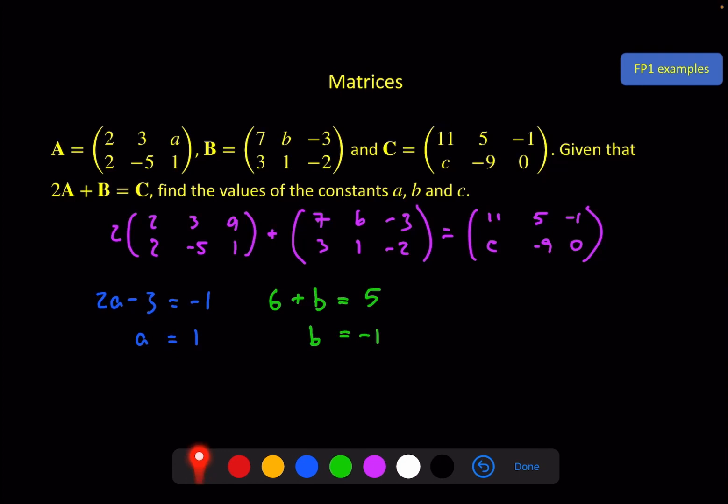And for the C, we've got the second row first column elements, which gives us a 4 plus 3 equals C. So C must equal 7.